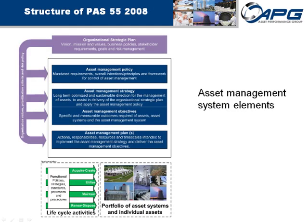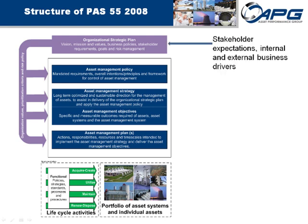Let's take a look at the asset management system in some detail. This illustration shows the elements of the system: policy, strategy, objectives, and asset management plans. This is a top-down approach. There must be an organizational strategic plan — all other elements will leverage this for direction for the care and operation of the physical assets. We need a roadmap; we need a direction.